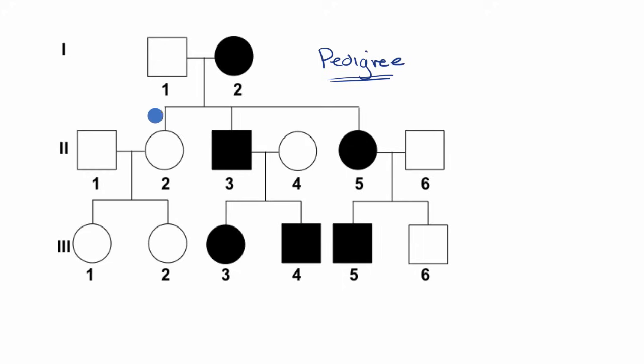But just going back to understanding the pedigree itself, when you have a horizontal line connecting a male and a female, it's called a marriage line. And it means that they are coupling up and they are reproducing. They don't necessarily have to be married. It's more that they reproduce. So this male and this female have reproduced.